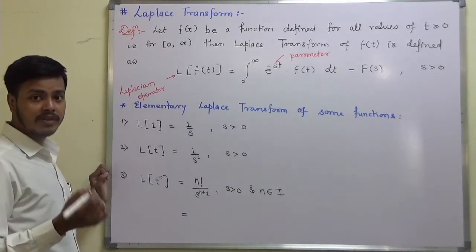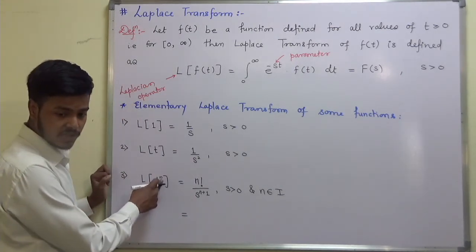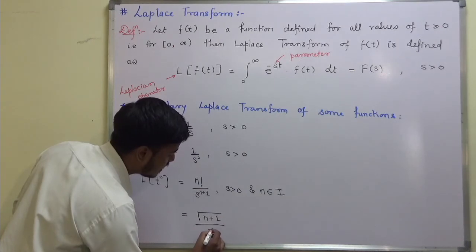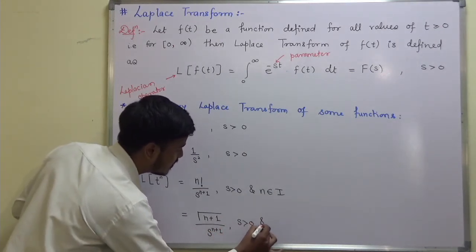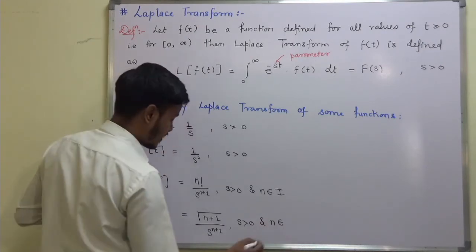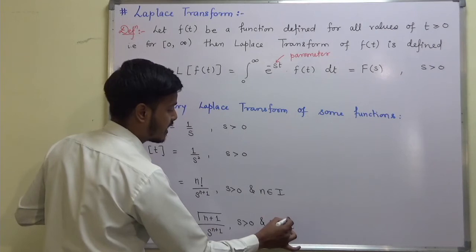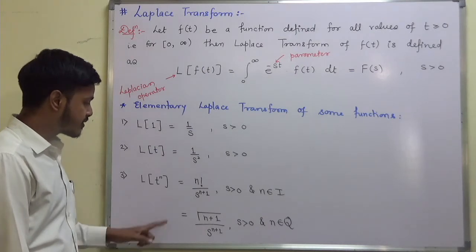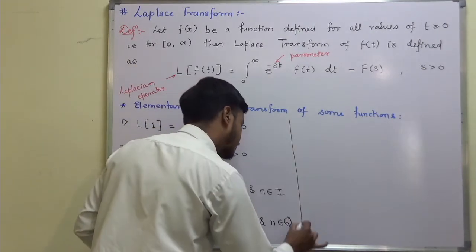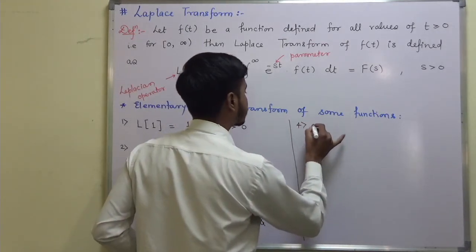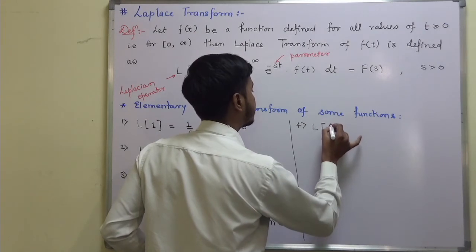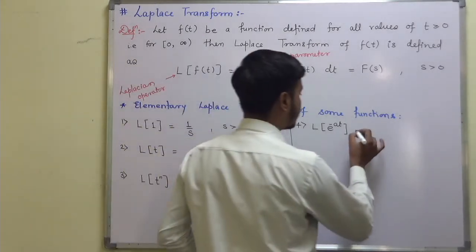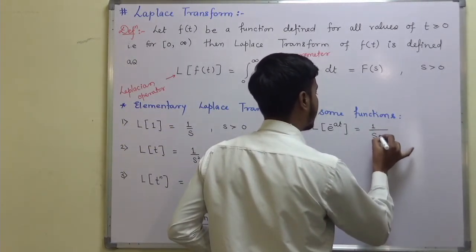The second case for the Laplace transform of t^n is when n is a fraction — that is, rational numbers of the form p/q where q is not equal to zero — in which case the answer is expressed in terms of the gamma function. Next: the Laplace transform of e^(−at) is 1/(s+a).